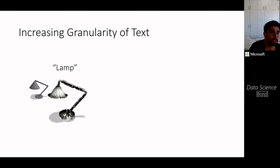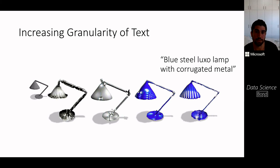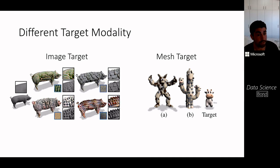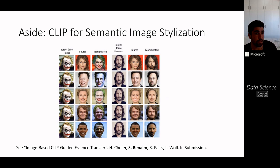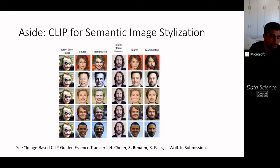We can increase the granularity of text prompts — starting from 'a lamp,' adding 'Luxo lamp,' then 'a blue steel Luxo lamp,' and so on. We can also increase the mesh granularity. Interestingly, because CLIP can accept not only text but also an image as input, we can use an image to stylize the input mesh, or even stylize it using a target mesh. This CLIP-based approach was also used in a different work for image-based style transfer, which we call essence transfer, and it is useful not only for 3D but for other visual content as well.